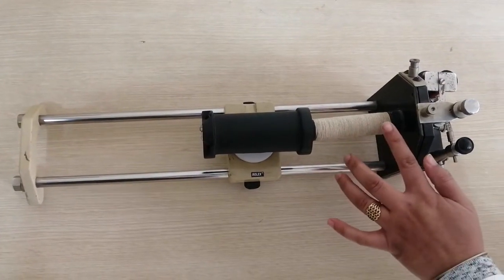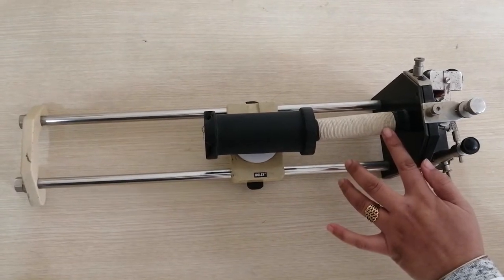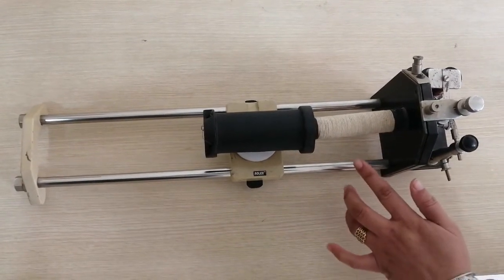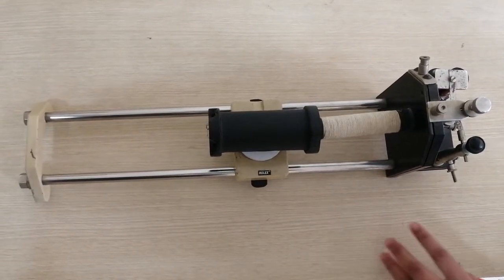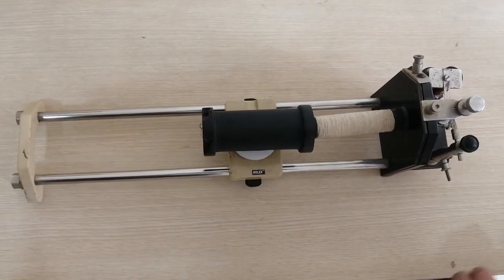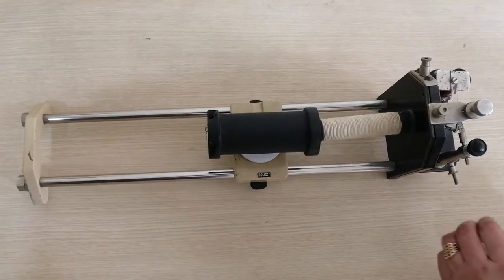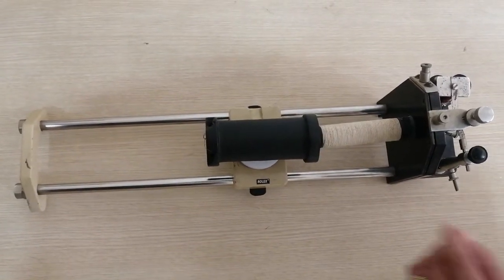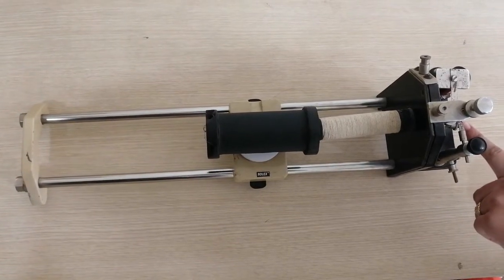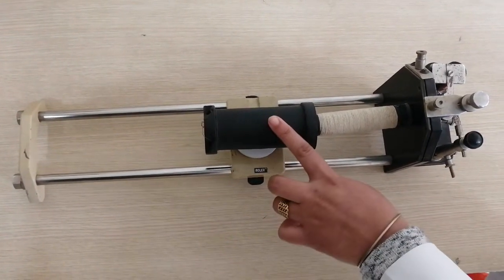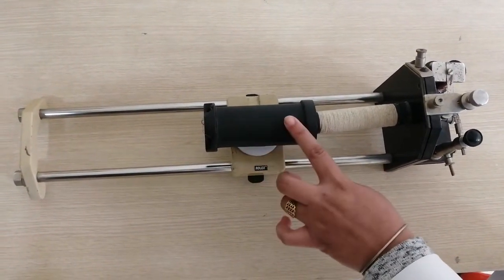This induction coil converts direct current into induced current. The primary and secondary coils have insulated copper wire wrapped around a soft iron core. The primary coil is connected to the DC supply, and the secondary coil can be connected to electrodes.